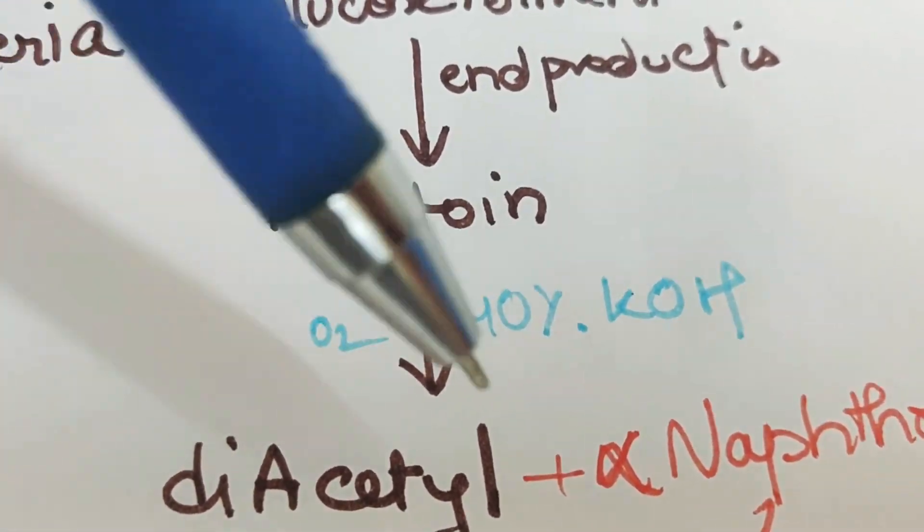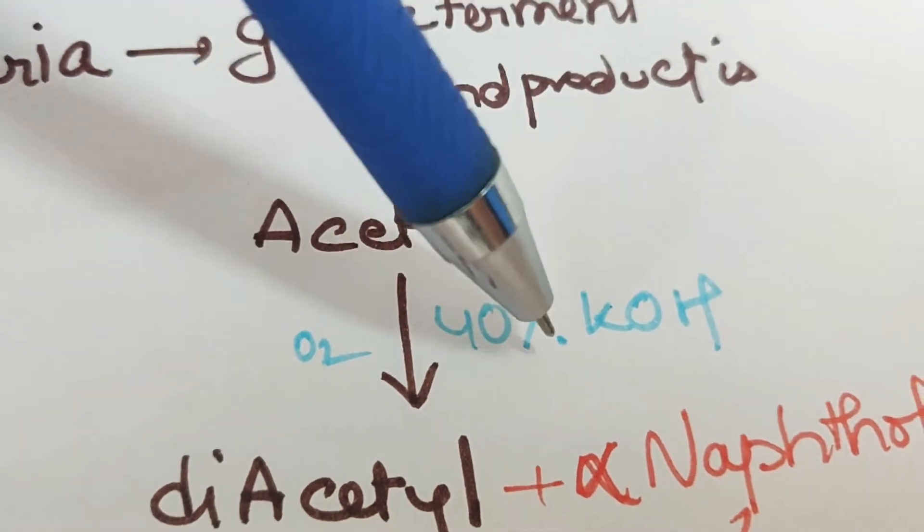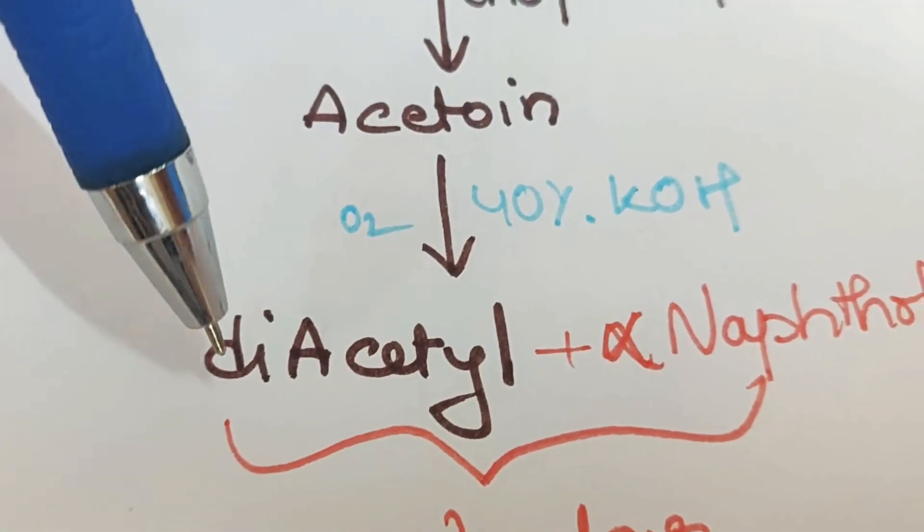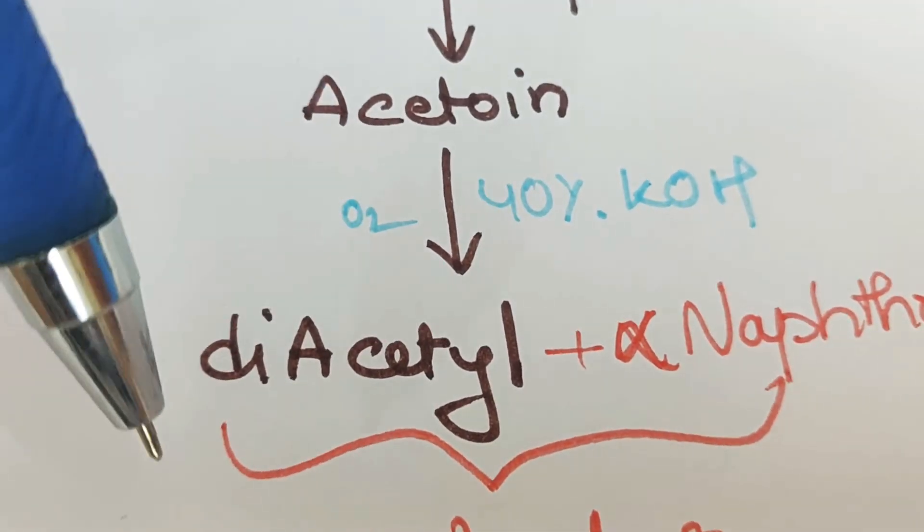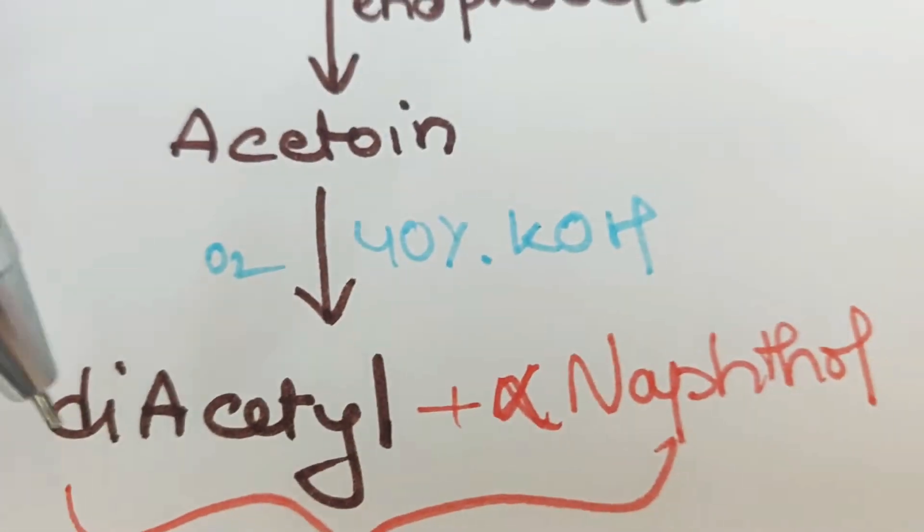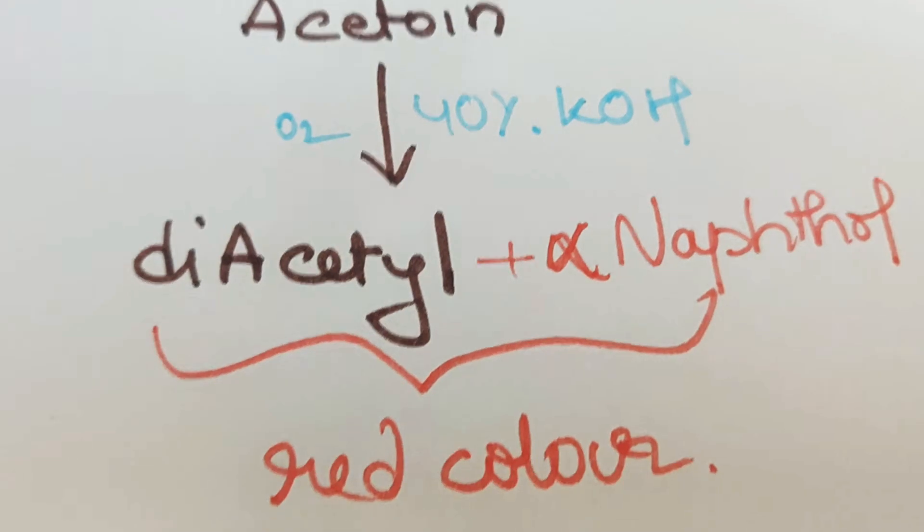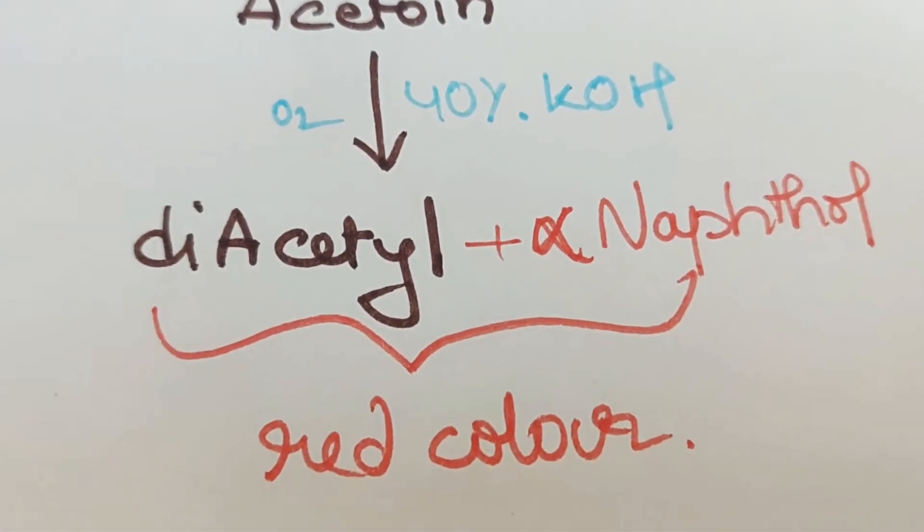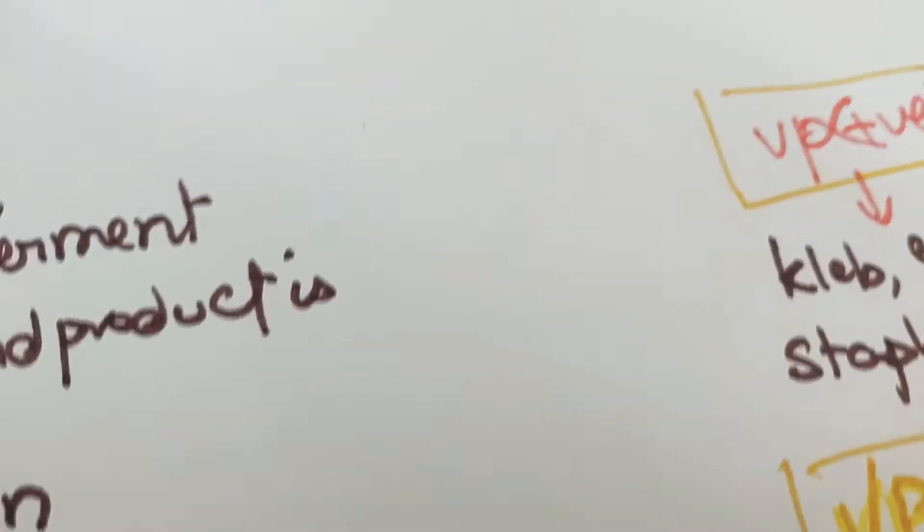there is formation of diacetyl. This diacetyl, when it reacts with alpha naphthol, produces a red color in the tube. This is about the VP test.